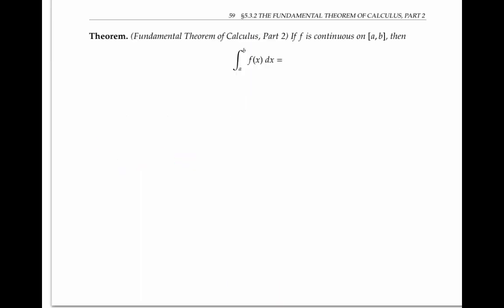Part two of the fundamental theorem of calculus says that if f is a continuous function on the closed interval [a, b], then the integral from a to b of f(x) dx is equal to F(b) minus F(a),